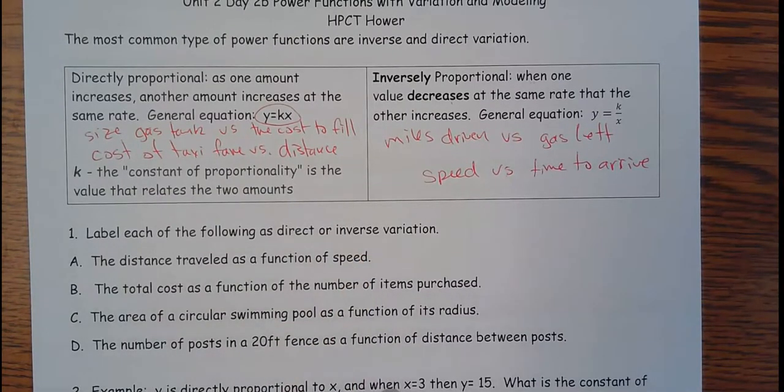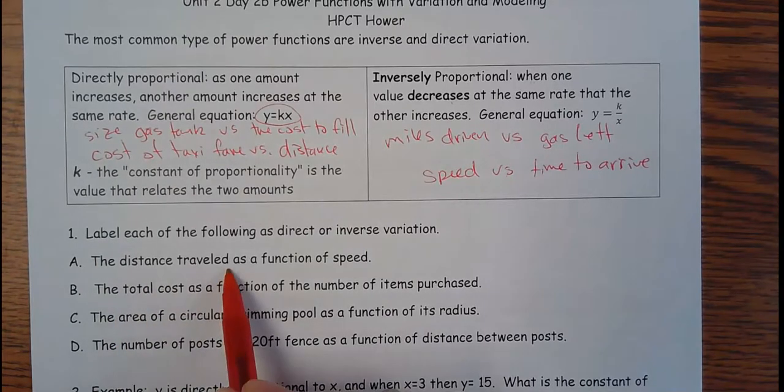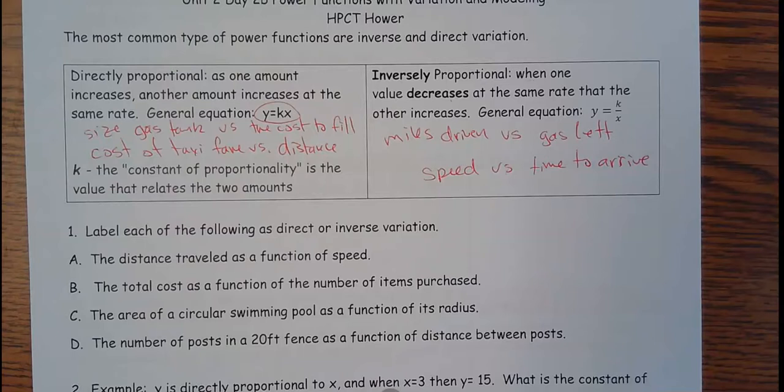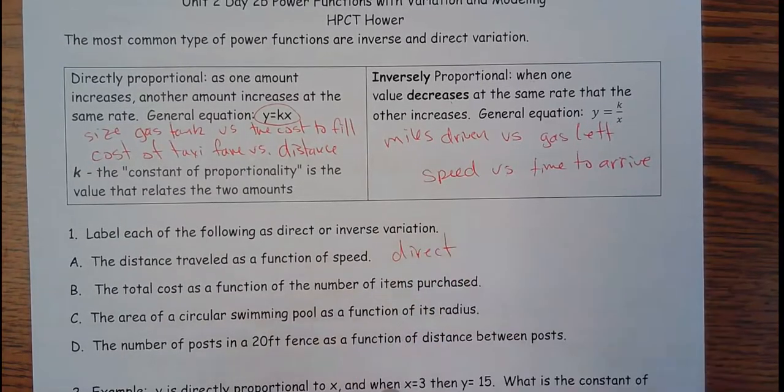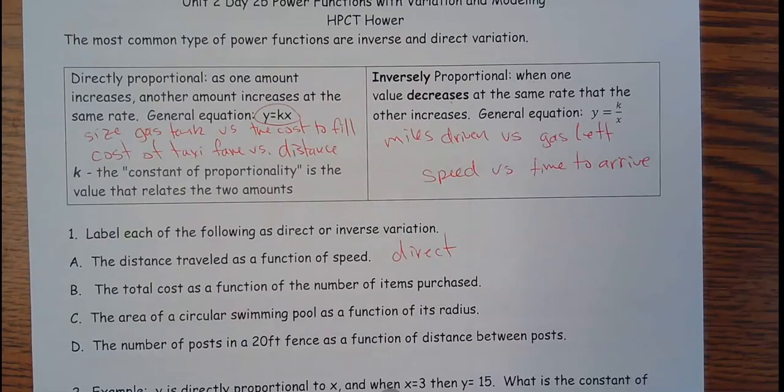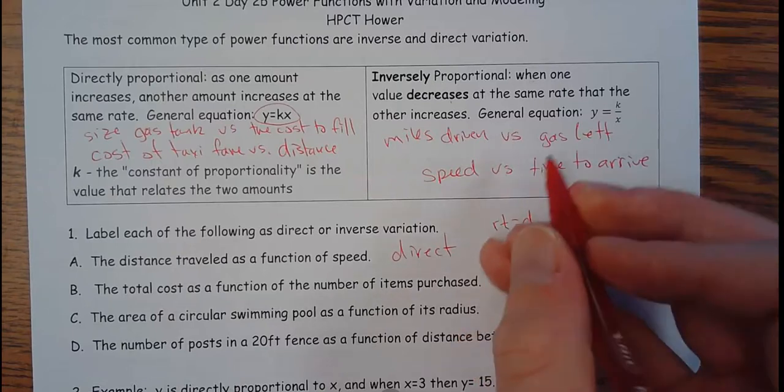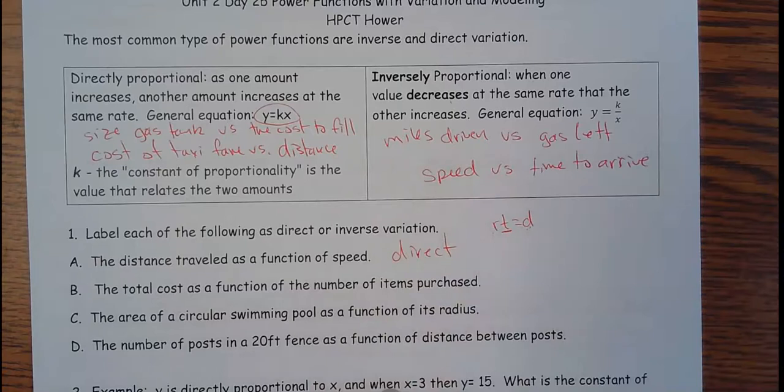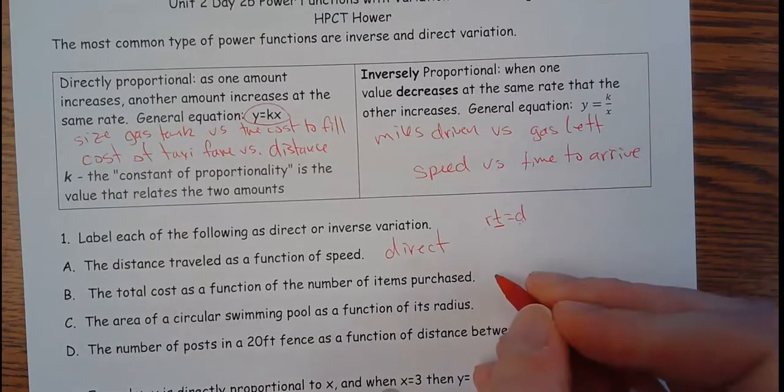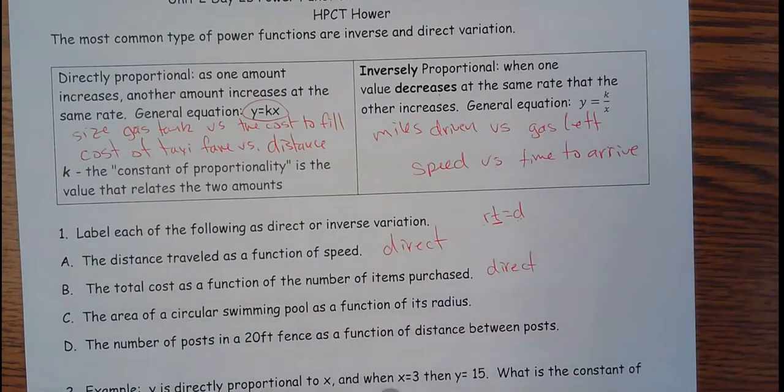So let's label each as direct or inverse variation. The distance traveled as a function of speed. If you're going faster, you're going to cover more distance. So that would be direct. There's some constant in between that decides how that is. You think rate times time equals distance. Well, T is going to be that K in between that's deciding how they're being multiplied. The total cost as a function of the number of items purchased. It would go up as you buy more items. So that is direct.